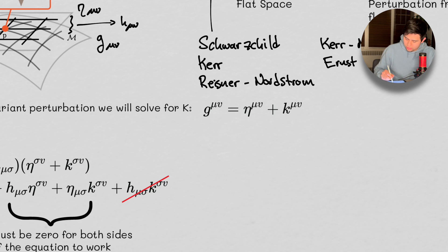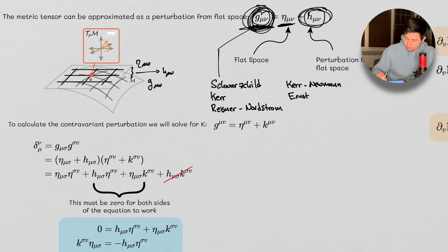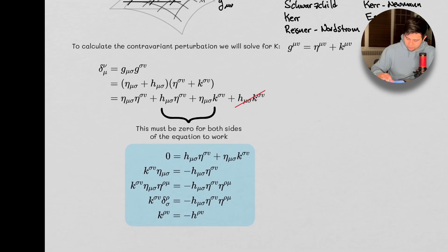So to understand the contravariant metric — again, this is just a perturbation from flat space — we're going to use K_μν instead of H_μν and see what the relationship is between K and H. So let's go ahead and do that right now.